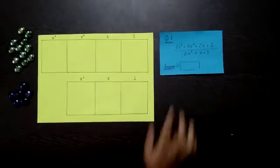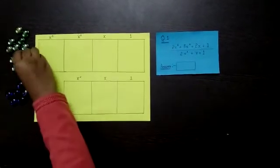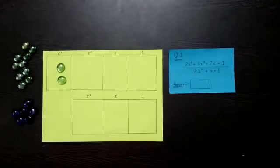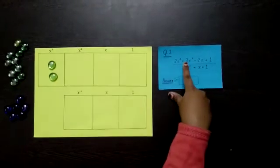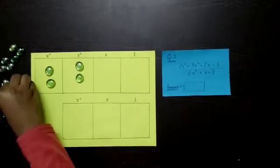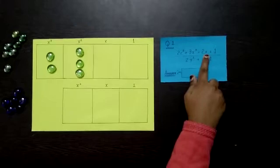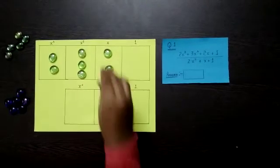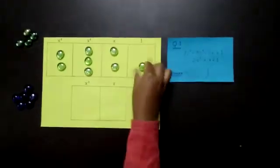So we will start. Here we have 2x³, so we will add 2 marbles in the x³ box. Then we have 3x², so we will put 3 marbles in the x² box. Then we have 2x, so we will add 2 marbles in the x box. Then we have 1, so in the 1 box we will add 1 marble.